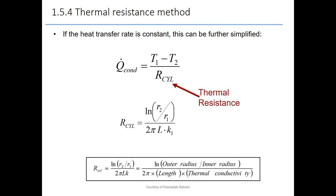Same as for the plane wall — how to find R thermal resistance for the cylindrical shape. We know that Q dot equals (T1 − T2) / R. By comparing with the previous equation, we can conclude that R_cylindrical equals ln(R2/R1) divided by 2πLK, where K1 is the thermal conductivity for the pipe material at radius R1.